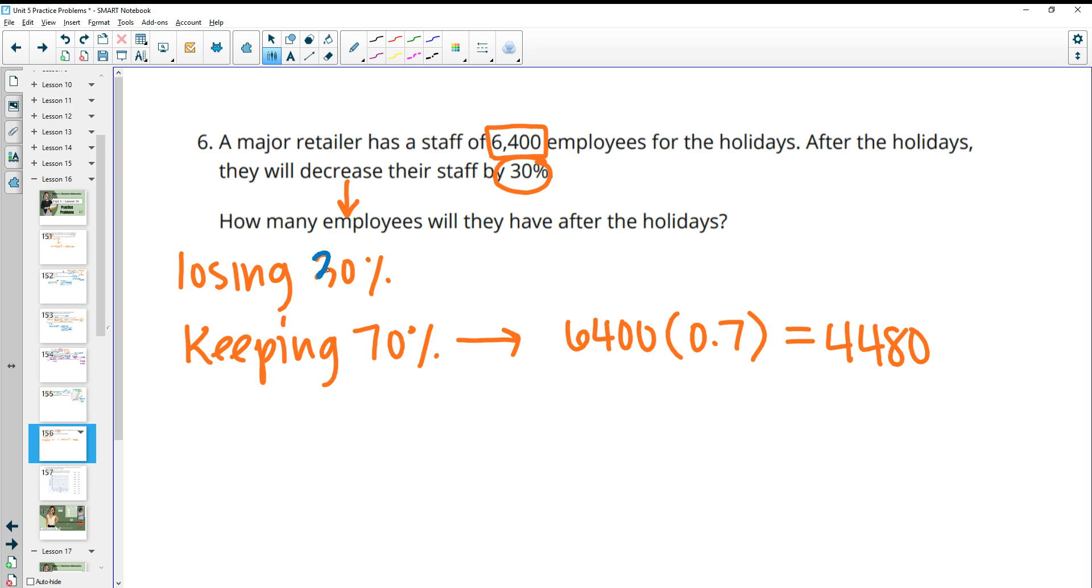If you want to think about it as losing, you could do 6,400 times 0.3, and this would give you how many employees they're losing. So if we do 6,400 times 0.3, we get that they're losing 1,920 employees. So this is the number they're losing. So then we'd have to do 6,400 minus 1,920, and that would get us to that 4,480. So kind of two different options there on how you might think about that.